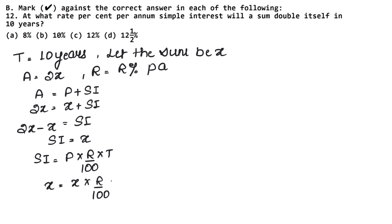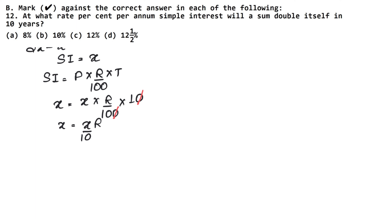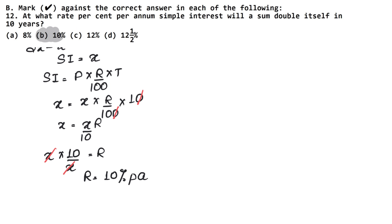Using the formula SI = P×R×T/100, we have simple interest = x, principal = x, and time = 10 years. So x = x×r×10/100. The 10 and 10 cancel, giving x = xr/10. So r = 10% per annum. Hence our B part is our correct answer. Let's do the next question now.